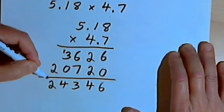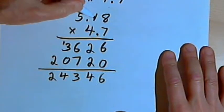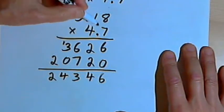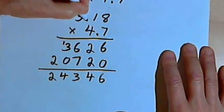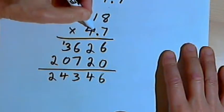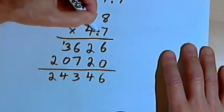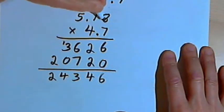And now I've got to put the decimal point in. What I'm going to do is count how many decimal places there are in each of the numbers that I was multiplying with. So in the 5.18, after the decimal point, I go out 2 more decimal places to the right. And in the other number, 4.7, I go out 1 decimal place to the right. So that's a total of 3 decimal places.